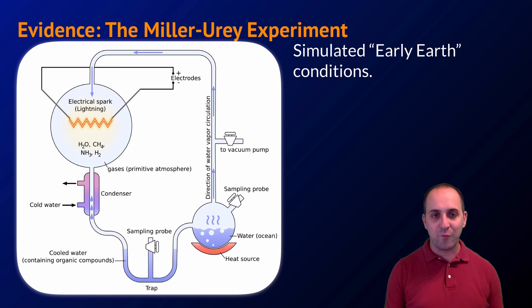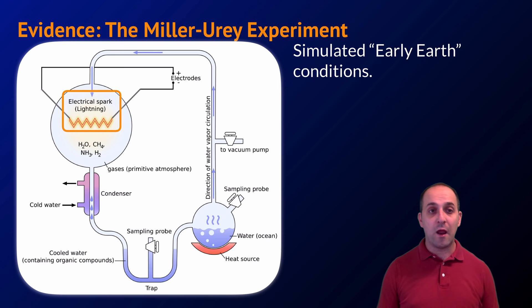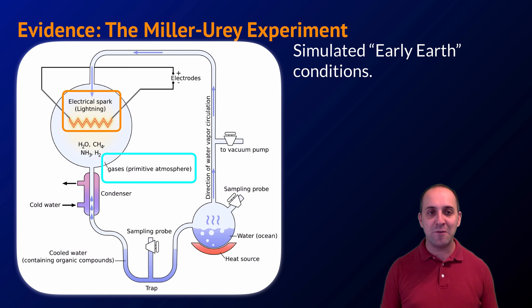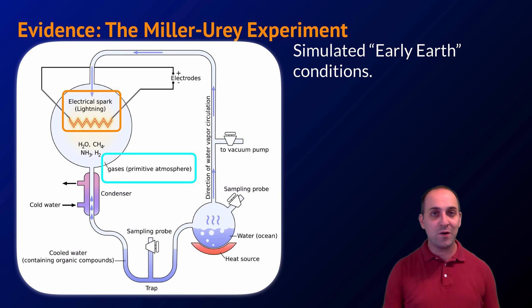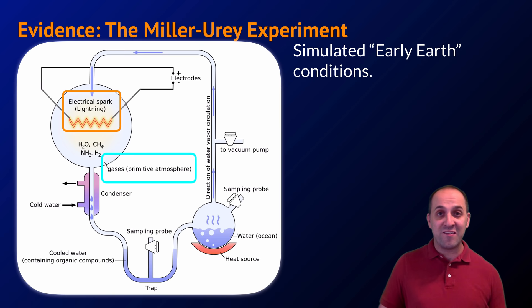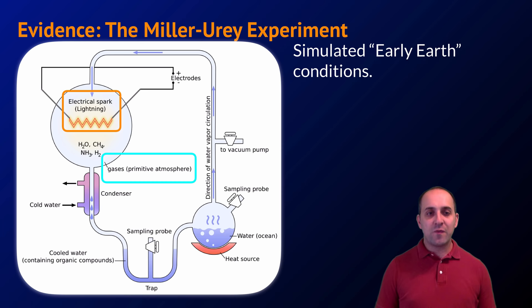The Miller-Urey experiment, done in the late 1950s and early 1960s, sought to simulate early Earth conditions. It included an energy source simulating lightning, and a mixture of gases comprising a primitive atmosphere. Critically, these gases did not include oxygen gas, which was not thought to be present on early Earth. After the gases interacted with the lightning spark, they were passed through water simulating the early oceans.